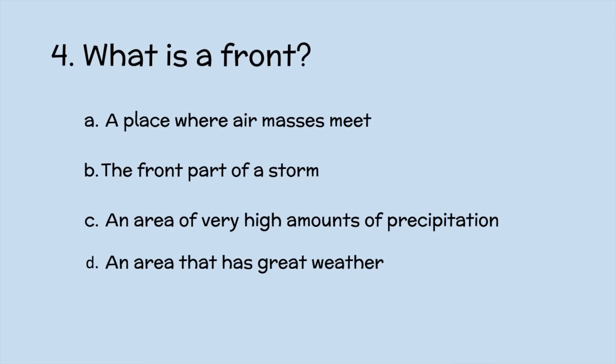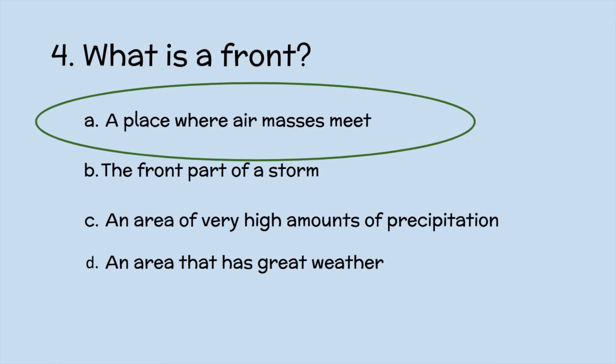Number four: What is a front? A — a place where air masses meet? B — the front part of a storm? C — an area of very high amounts of precipitation? Or D — an area that has great weather? If you said A, a place where air masses meet, you are correct. Thank you for joining me today as we talked about weather maps. Until next time.